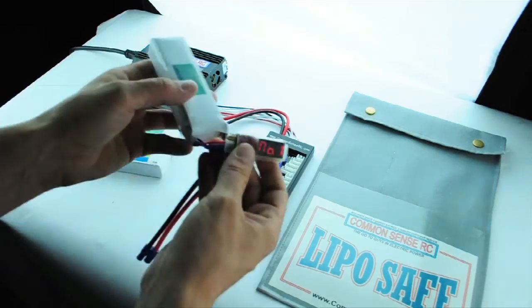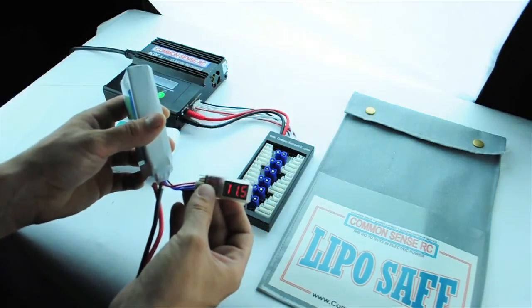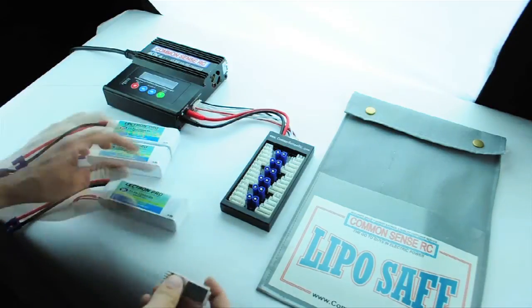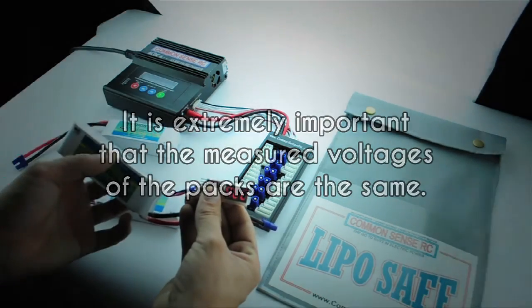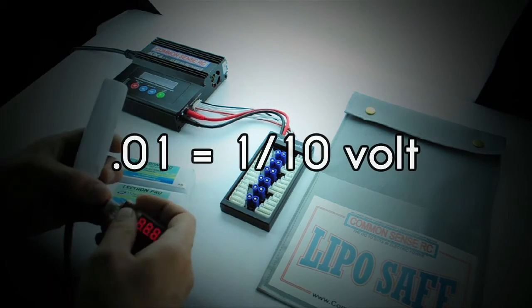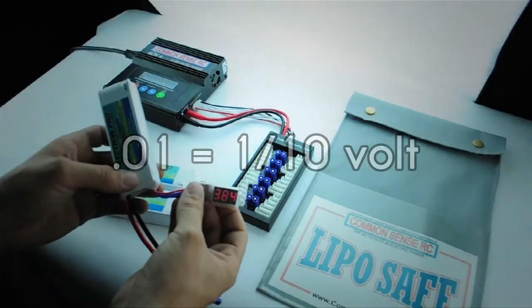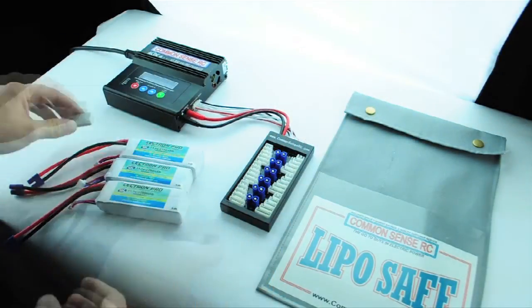To get the voltage of the packs, you should use a LiPo voltage tester or multimeter. It is extremely important that the measured voltages of the packs are the same. Do not charge packs if the voltages between packs vary by more than a tenth of a volt or if the battery is severely unbalanced.